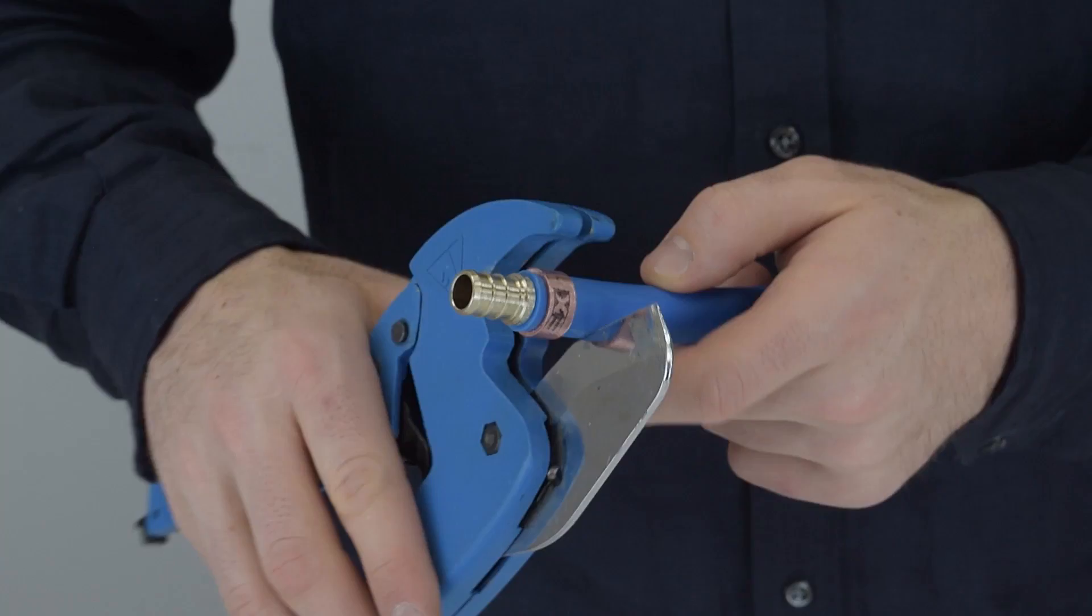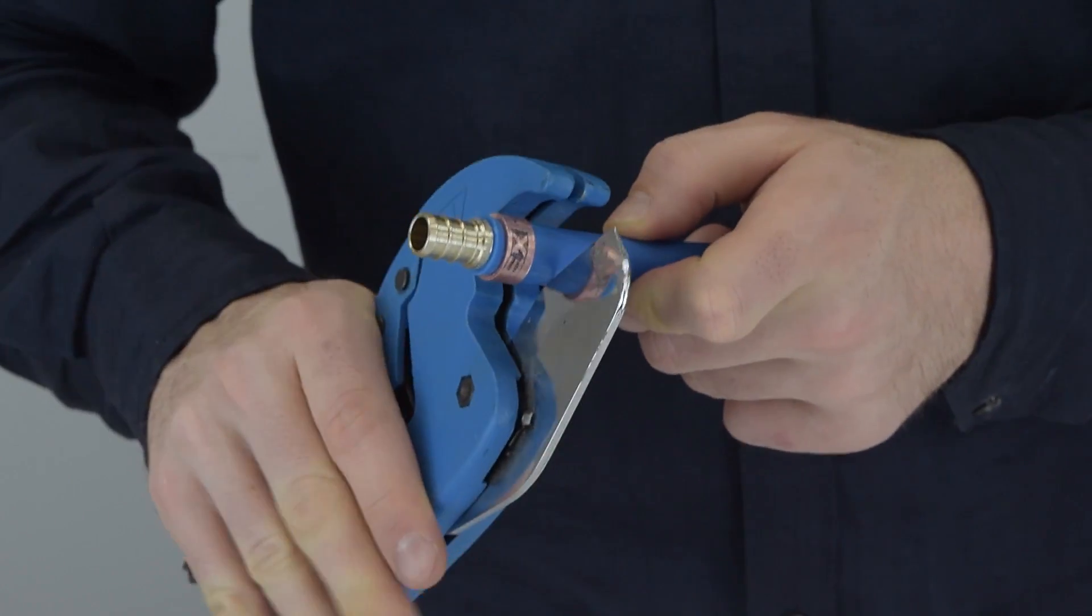If the connection isn't good or you realize you put on the wrong fitting, you can use a decrimping tool to remove it. But first, you're going to have to cut the tubing, so just like before, you take your cutter to the tube.